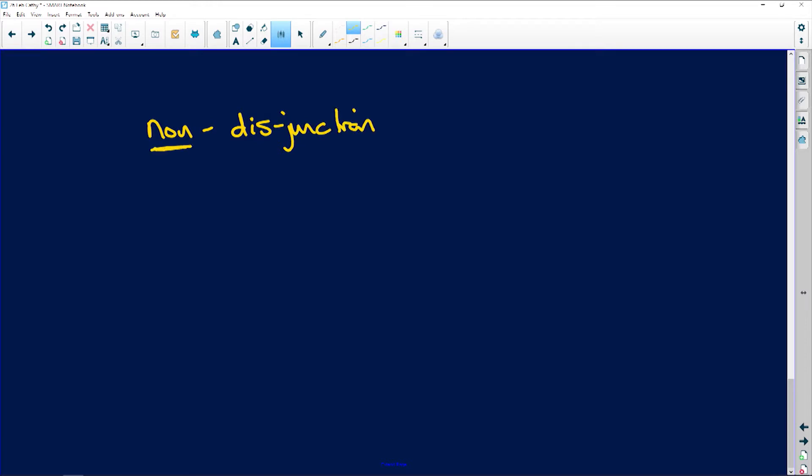Non means no, bad, don't do it. And disjunction means to separate. So when there is non-disjunction, it means that there is no separation. That's what non-disjunction is.